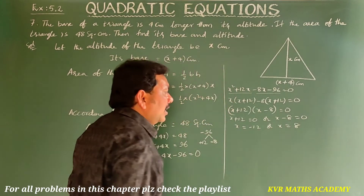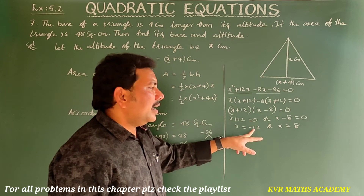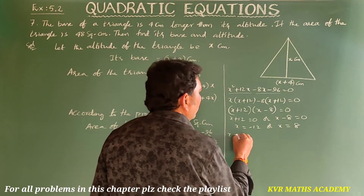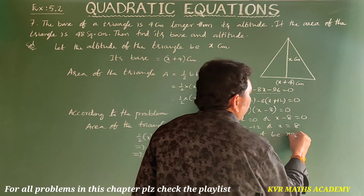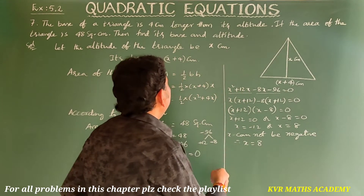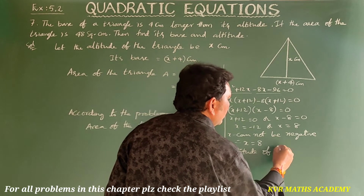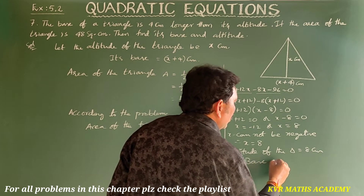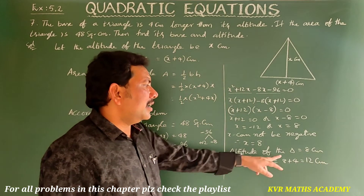So x plus 12 = 0 or x minus 8 = 0, meaning x = minus 12 or x = 8. Since length cannot be negative, x cannot be negative, therefore x = 8. So the altitude of the triangle is 8 centimeters.